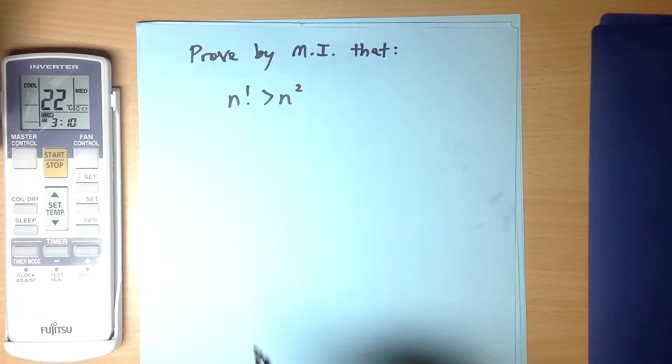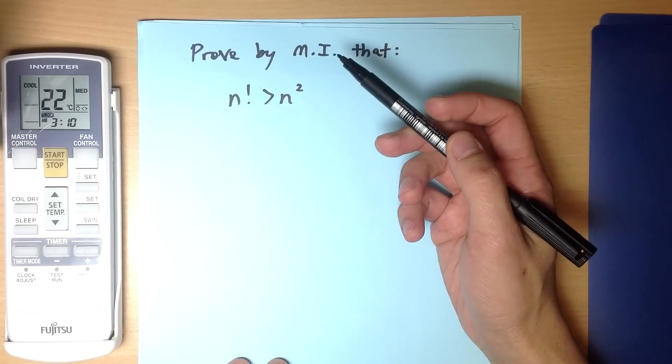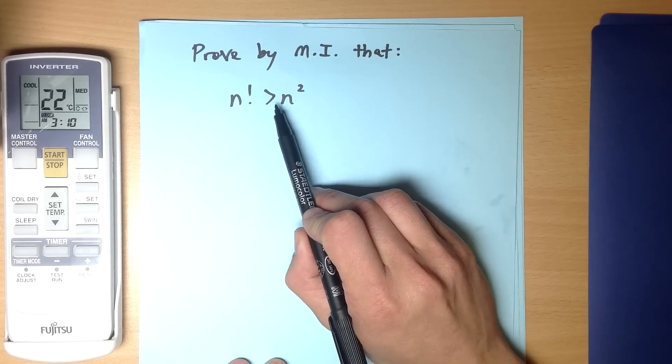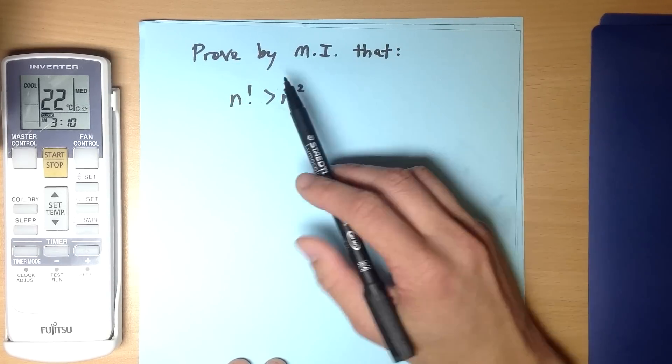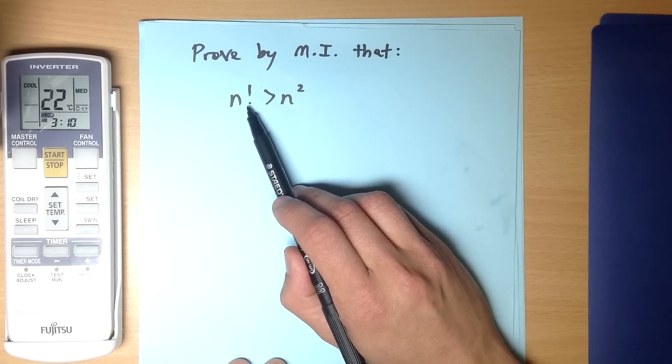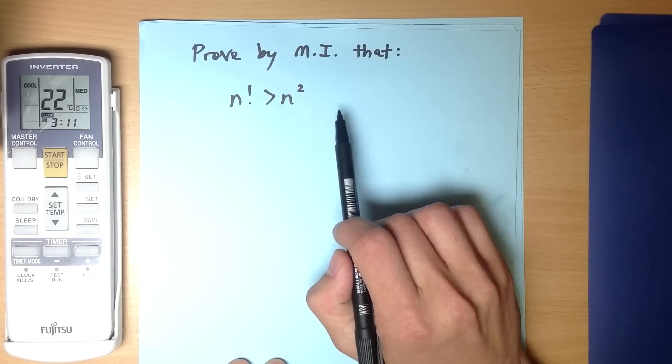Now if you try out some values, for instance if you try 1, you're like 1 factorial, that's 1 and 1 squared is also 1. 1 greater than 1, that's not true, and in fact if you try the next number, 2 factorial that's 2, 2 squared that's 4, that's also not true. 3 is not true either.